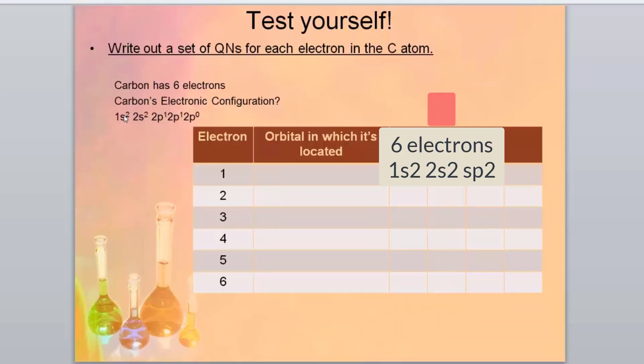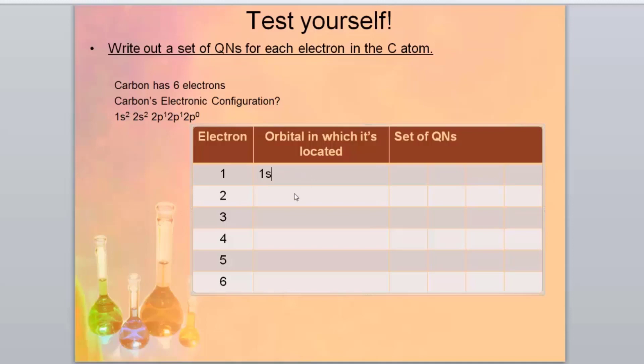So our first electron is in the 1s orbital and our second one is in the 1s orbital. So to describe our 1s orbital, how would I do that?